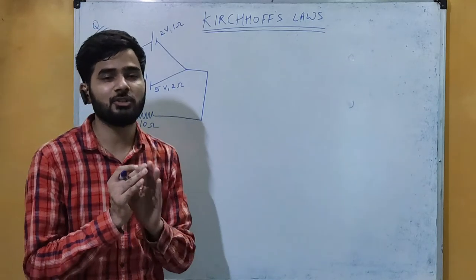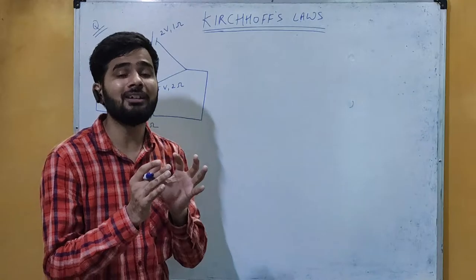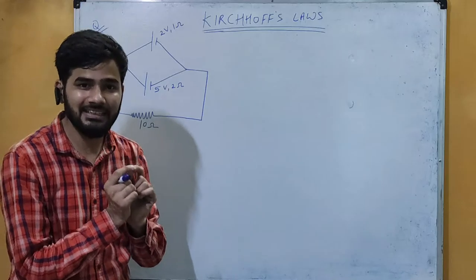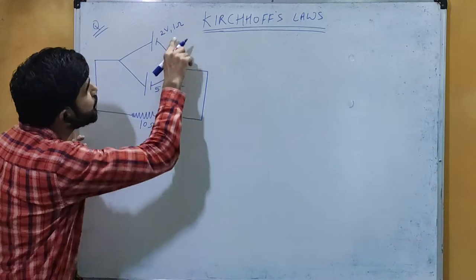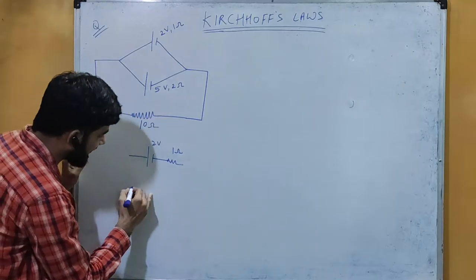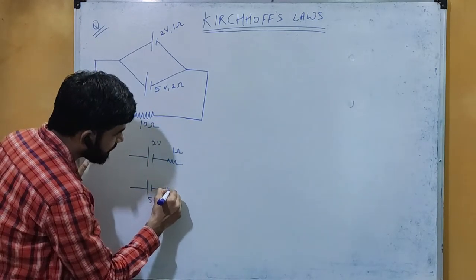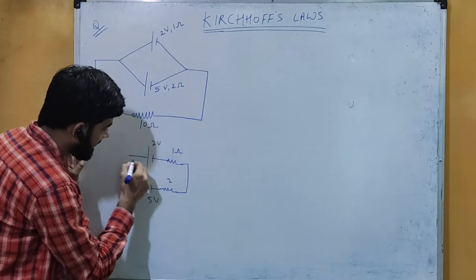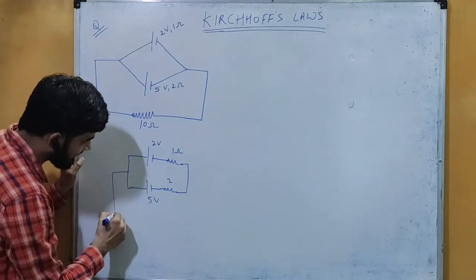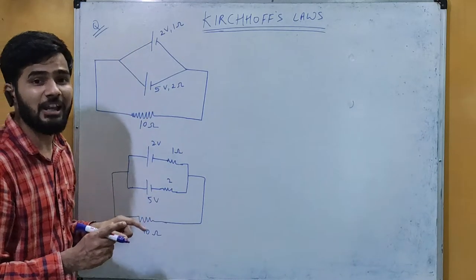The direction of current is not given to us, and the 1 ohm internal resistance may create confusion. So what we will do is first draw the direction of the current and draw the internal resistance along with the cell in series. I can draw here a cell of EMF 2 volt and internal resistance of 1 ohm in series. Both points will join together and here we have another resistance of 10 ohm connected.